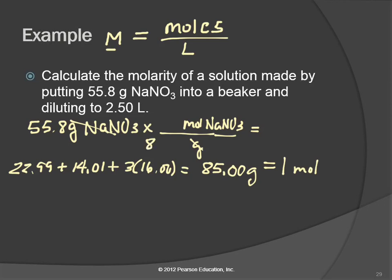So then the 85 goes down here, and we can calculate the number of moles: 55.8 divided by 85 equals 0.656 moles. That's the moles of solute. So 0.656 moles divided by the volume, 2.50 liters. If that is given in milliliters, you have to convert it to liters. It has to be moles per liter. 0.656 divided by 2.50 equals 0.263.